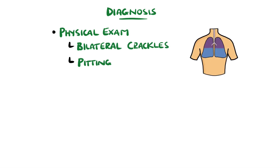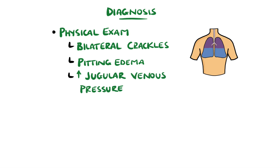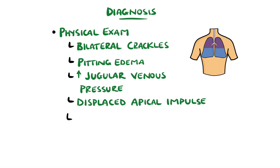Physical exam findings can include bilateral crackles on auscultation of the lungs, pitting peripheral edema, raised jugular venous pressure, a displaced point of maximum impulse, and potentially an S3 gallop or murmurs on auscultation of the heart.